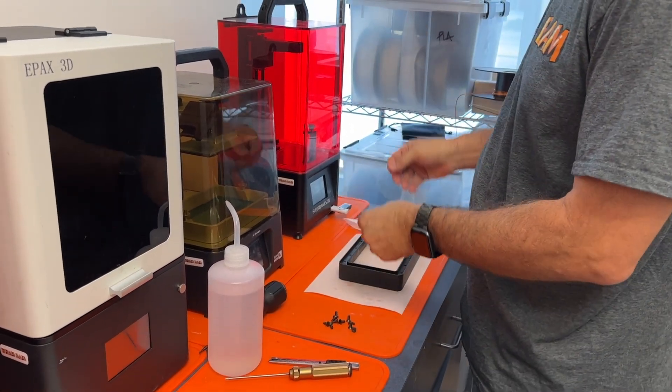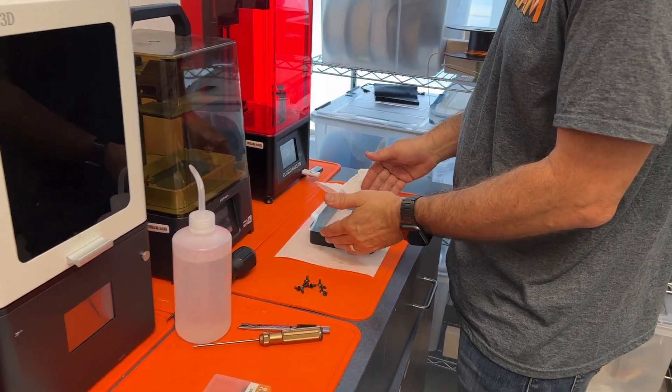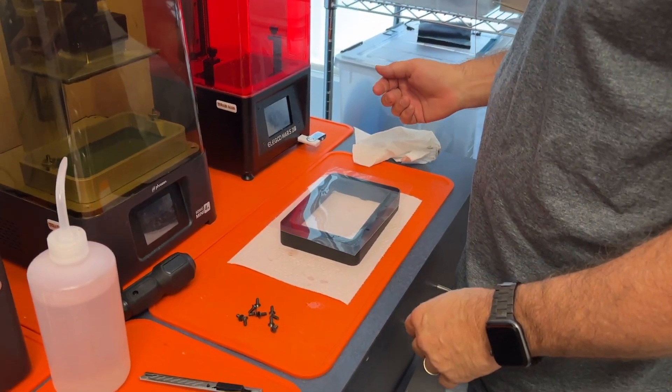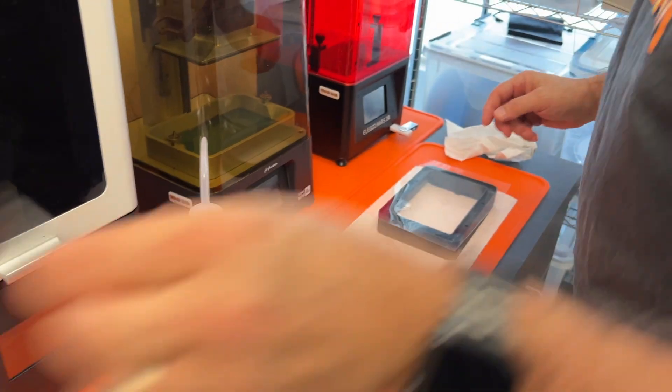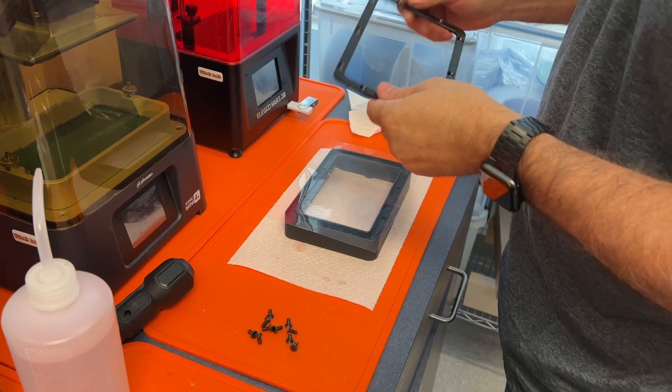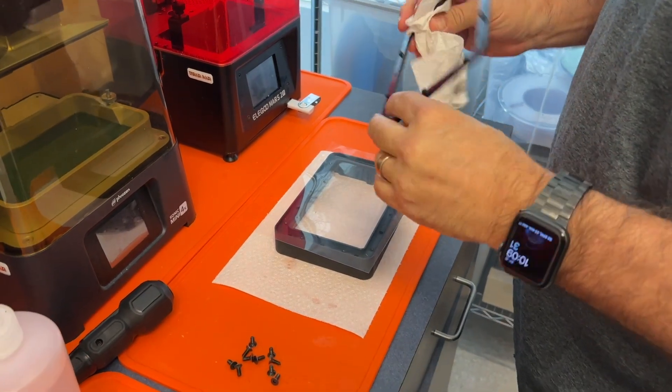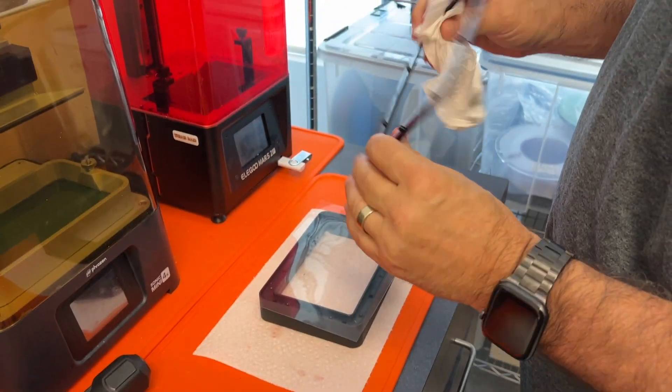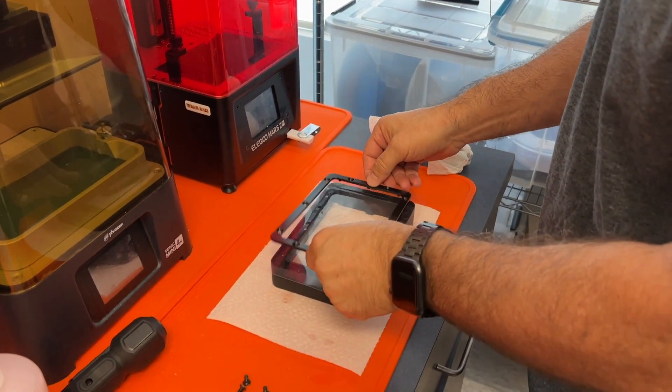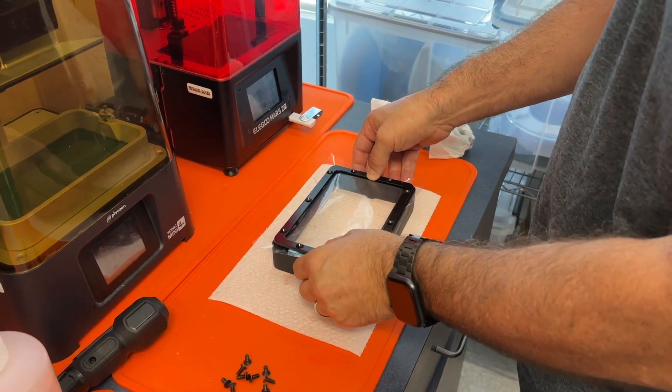So the first thing you want to do is take out your FEP sheet. Okay, this is NFEP, in this case by Epax. And kind of lay it over the top in a centered fashion. And then we're going to take our bezel, and you can see there's countersunk holes. You want the countersunk areas to be on the top. There's actually some registration prongs on the bottom of this one. Most of them have that. And we want to position this over and kind of semi-push it down.